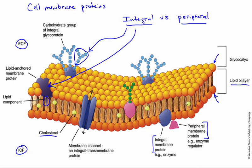Lastly, we have our transmembrane class of proteins. These are integral proteins that also pass all the way through the lipid bilayer. The groups found here would be proteins that are channels, carriers, or transport proteins, aiding and facilitating the movement of solutes from one side of the membrane to the other.